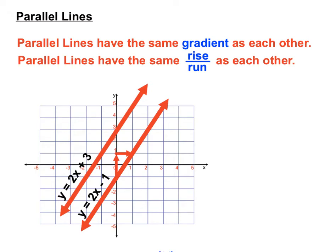It has the same rise over run. The first line, you will remember, rose 2 and ran 1 to get back to the line. Once again, this y equals 2x plus 3 rises 2 and runs 1 to get back to the line. So we've got the same relationship between the rise and run and the same gradient there.